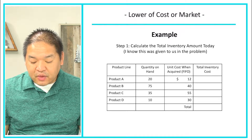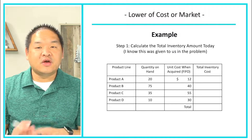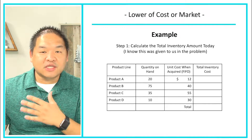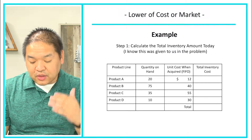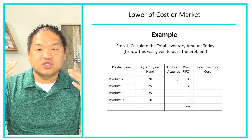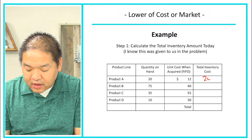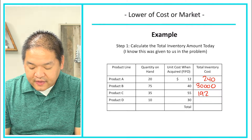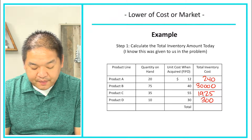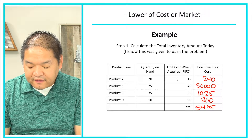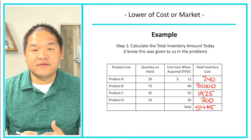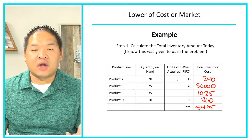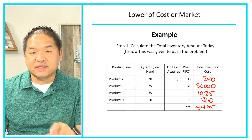Step one: calculate the total inventory amount. We multiply the quantity on hand times the cost incurred to acquire each item. So 20 × $12 = $240; 75 × $40 = $3,000; 35 × $55 = $1,925; and 10 × $30 = $300. Adding those up gives us $5,465 total inventory, broken down by item. This helps us understand what our losses are at the end of the day for each item.